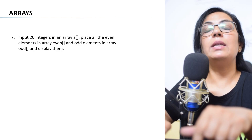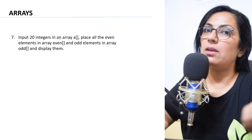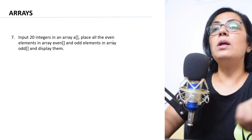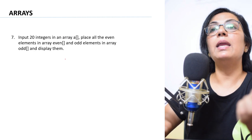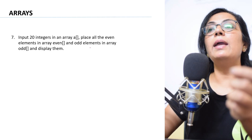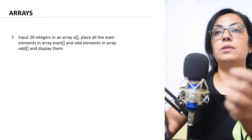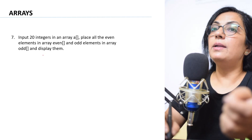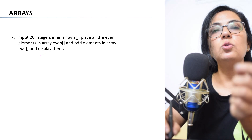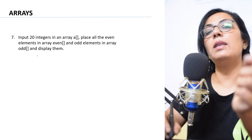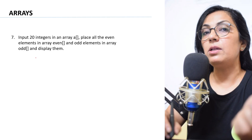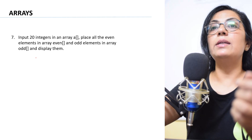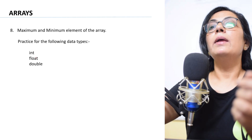The seventh type of question: input 20 integers in an array — the size can vary, it can be 10 or 50. Place all the even elements in array 'even' and all the odd elements in array 'odd'. This is a very important question. Please prepare this type of question and do comment in the comment section if you are not able to do any question — I will make videos on those.